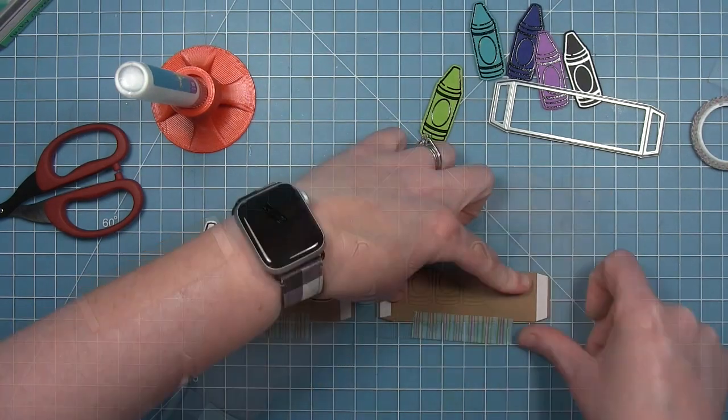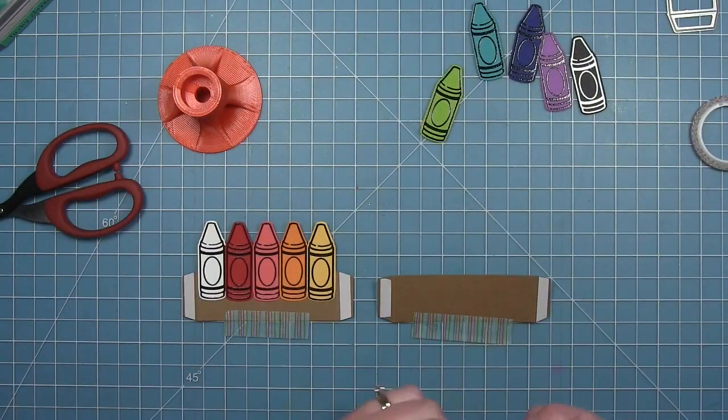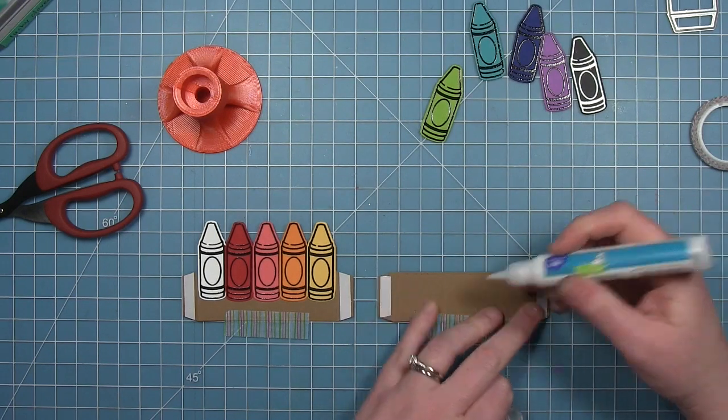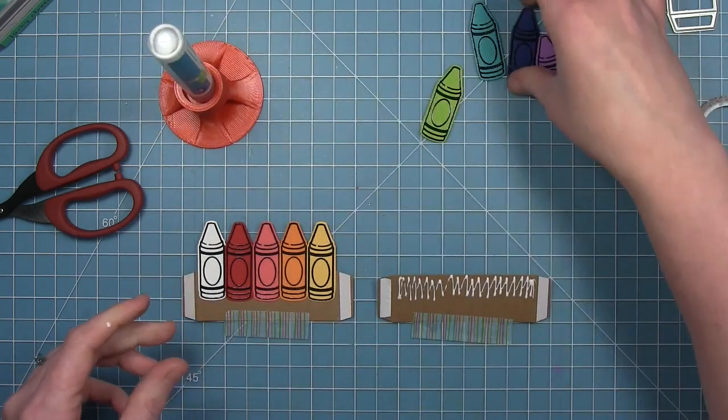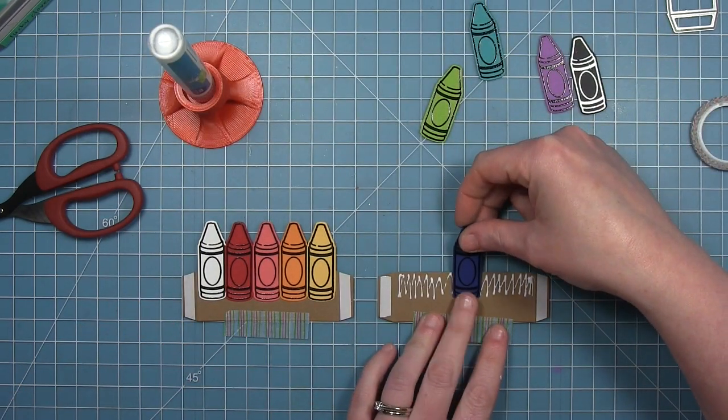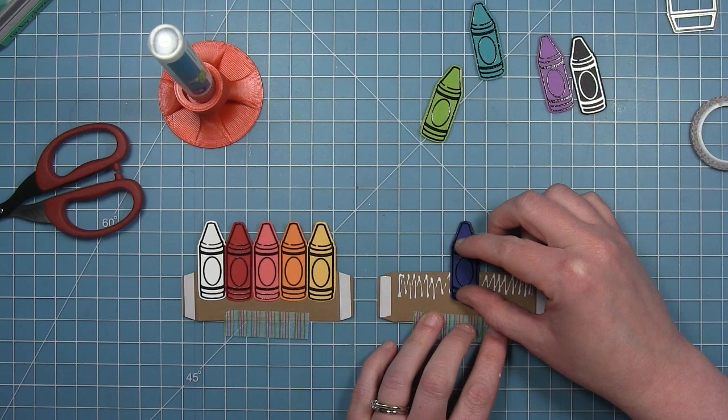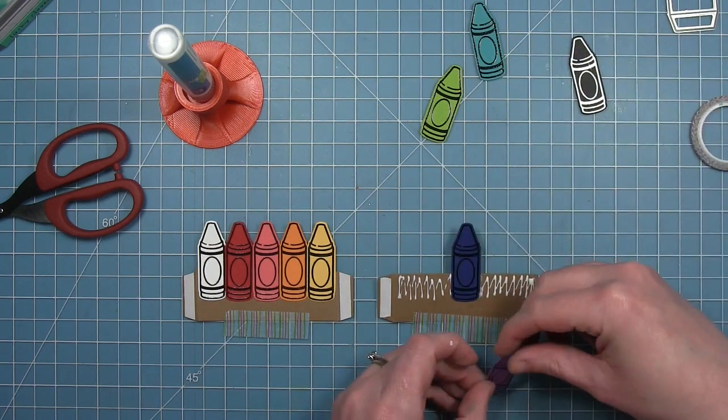The grid mat also helped me keep them all the same height. I moved that front one over to the side and I'm going to do the same thing for the one that's going to go in the back. And I lined them up on the same line on my grid mat and this will allow me to make sure that my crayons are the same height on both of them.